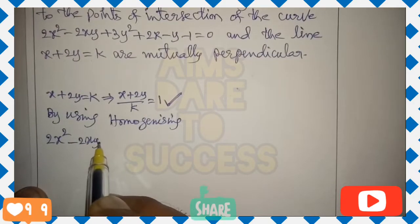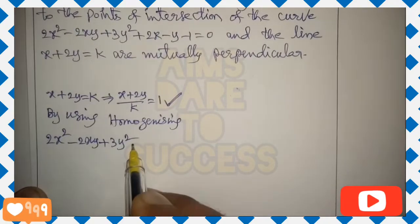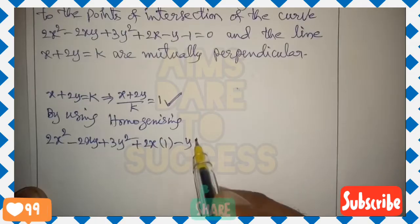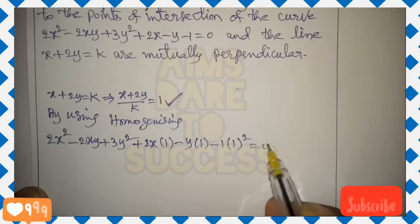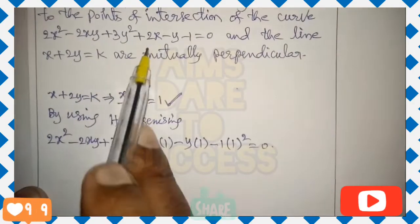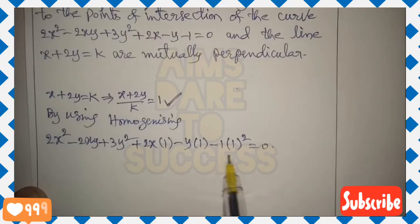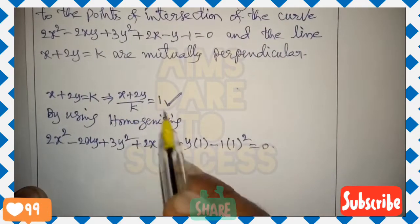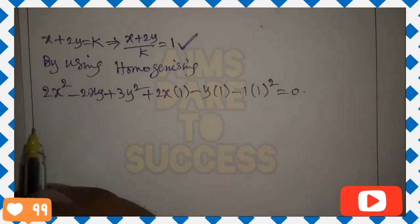By using homogenizing, according to the question: 2x² − 2xy + 3y² as it is, don't disturb. The x term multiplied by 1, the y term multiplied by 1, and the constant term multiplied by 1 whole square equals 0. The x², xy, and y² terms need no change — write them as is. The x term × 1, y term × 1, constant term × 1 whole square = 0. This is the homogenizing concept.